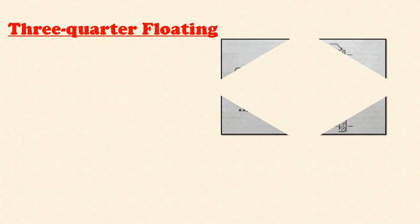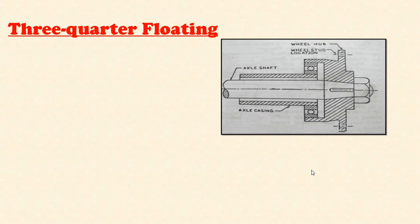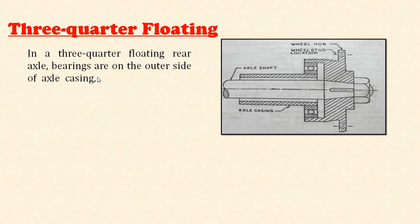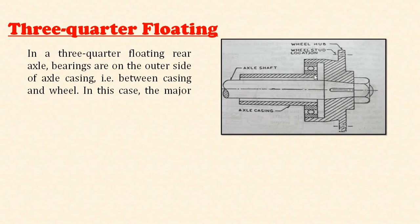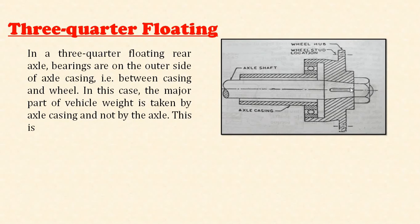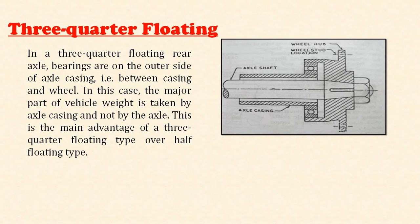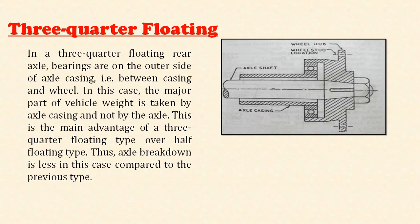In the three-quarter floating rear axle, the bearings are on the outer side of the axle casing, between the casing and the wheel. The major part of the vehicle weight is taken by the axle casing and not by the axle — this is the main advantage over the half-floating type, and axle breakdown is less in this case. The axle half-part is mounted inside the casing, bearings are mounted on it, and the wheel hub is mounted over the bearing using wheel studs. This is called the three-quarter floating type axle.